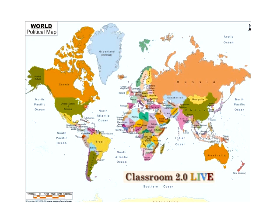I'm going to put you to work. Find the laser pointer on the whiteboard tools on the left side — the second option down, a little star. Click and drag it over the world map to show us where you're located. If that doesn't work, you can type it in the chat. I know we have someone from Azerbaijan today, and I'm in St. Catharines, Ontario, Canada. We've got a good cross-section of people across the globe.